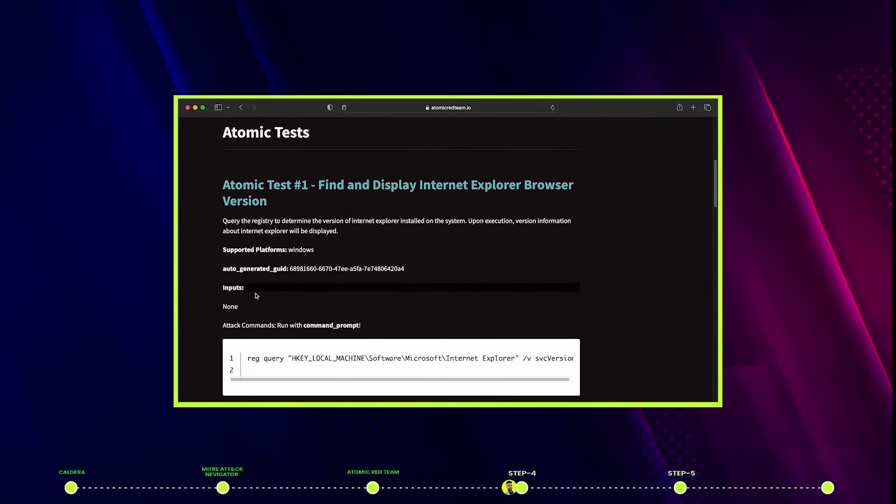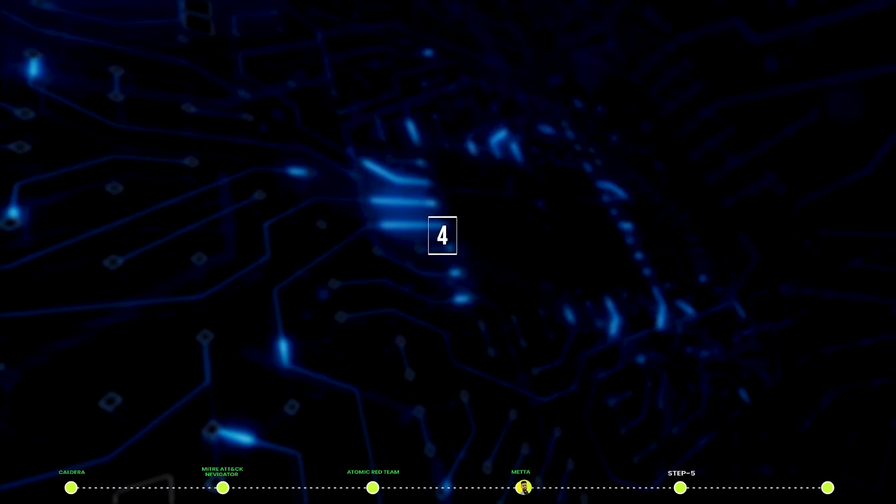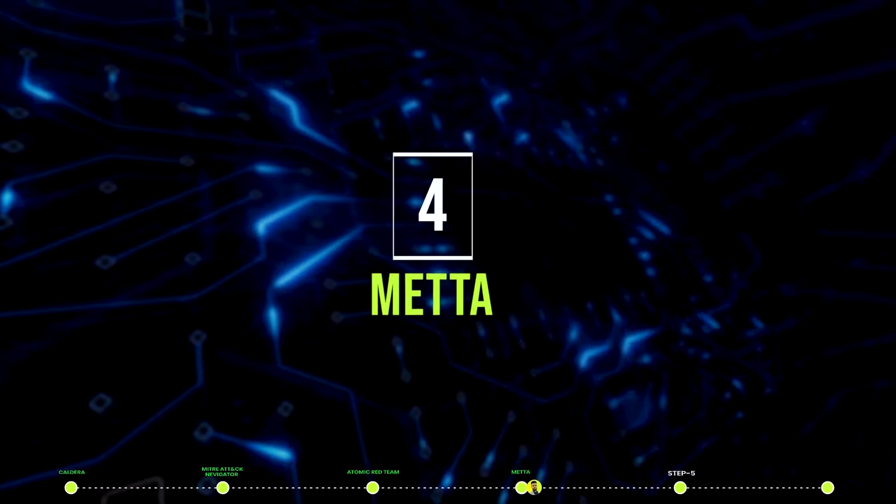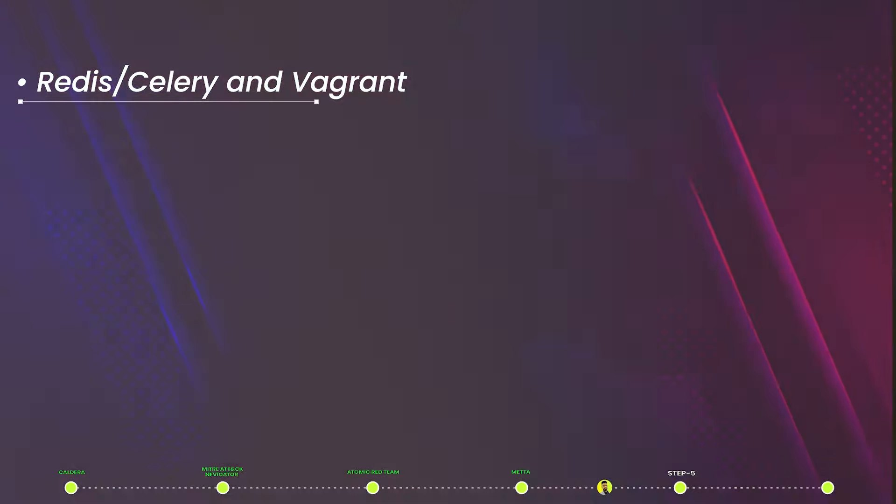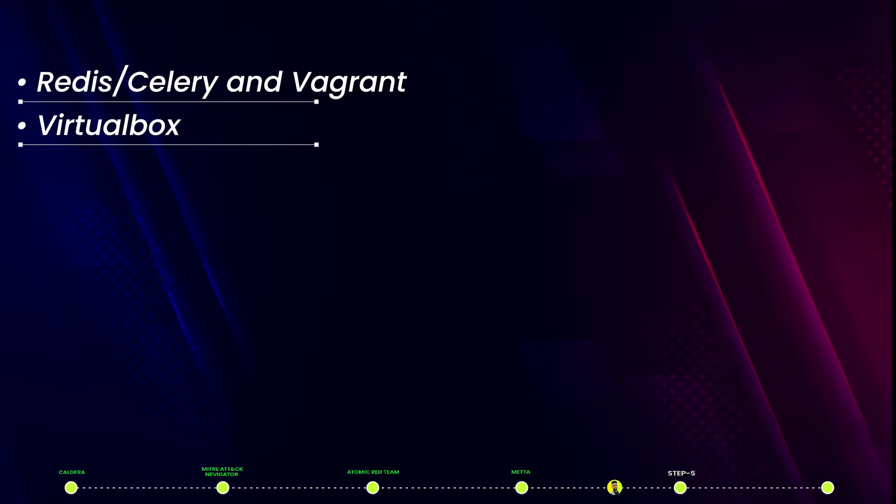As you can see, this test queries the registry to detect the version of Internet Explorer. Tool number four: META. It is an information security preparedness tool. META prepares adversarial simulations using Redis, Vagrant, and VirtualBox. You can learn more about META on their official GitHub account — link in the description.